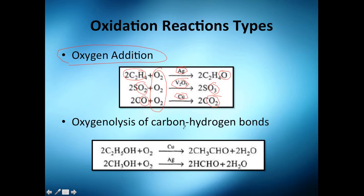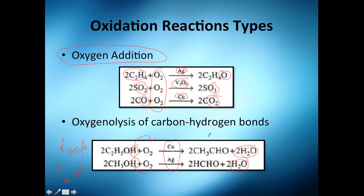Oxygen acts on carbon-hydrogen bonds. Essentially, you take out the hydrogen, and by definition, if you take out hydrogen, you're going to oxidize. When you add hydrogen, you're going to reduce. So if you take out hydrogen in the form of water, using copper and silver as catalysts, you can see you have four hydrogens here, whereas before you had six hydrogens — so you are technically oxidizing.